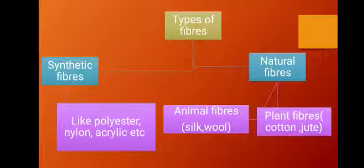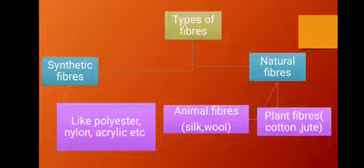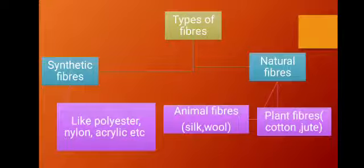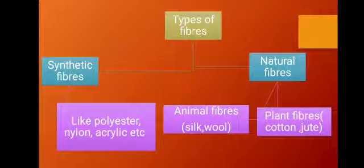Types of fibers: there are two types of fiber — natural fiber and synthetic fiber. Natural fibers are classified into two groups: animal fiber and plant fiber. Animal fibers are silk and wool. Plant fibers are cotton and jute. Synthetic fibers include polyester, nylon, acrylic, etc.